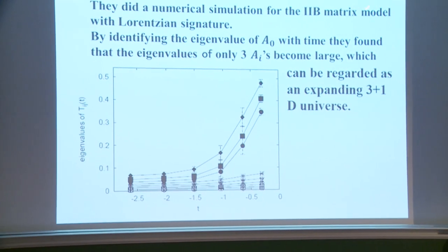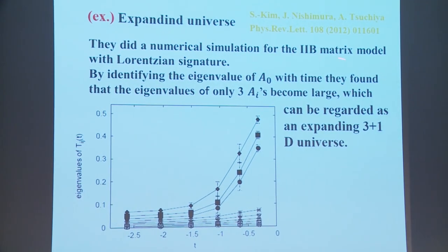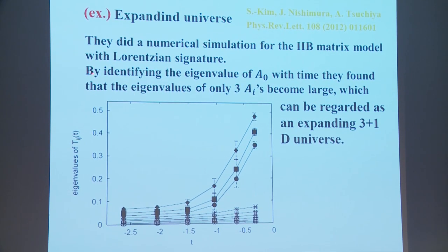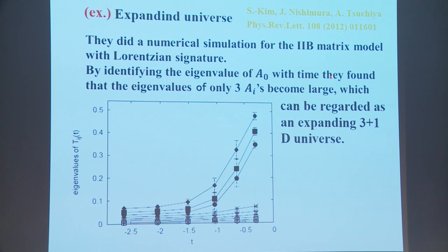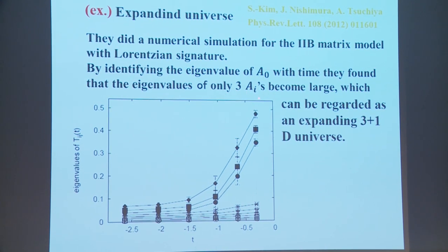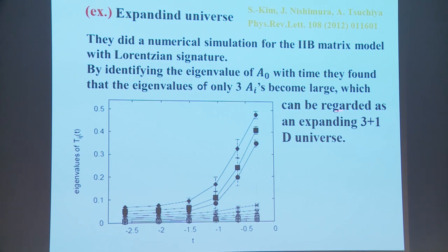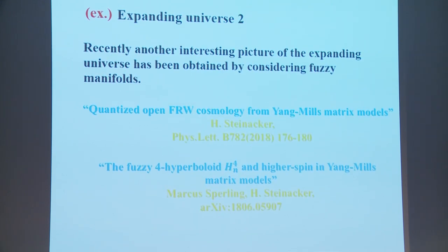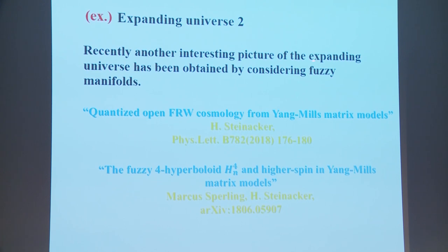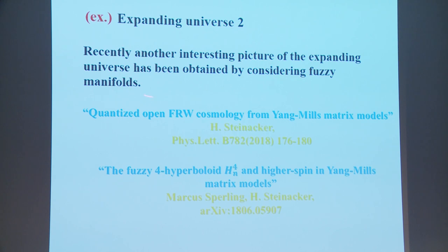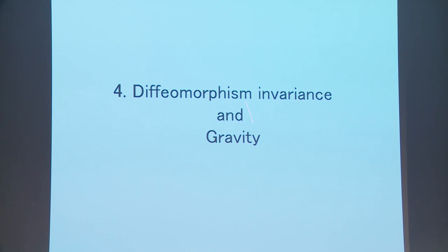These people did a numerical simulation for the 2B matrix model with Lorentzian signature. By identifying the eigenvalue of A0 with time, they found that the eigenvalues of only three A_i's become large, which can be regarded as an expanding 3+1 dimensional universe. Recently, another interesting picture of the expanding universe has been obtained by considering a fuzzy manifold.